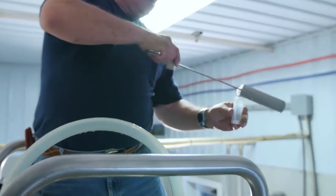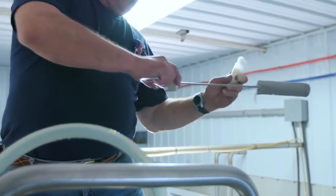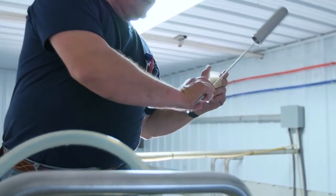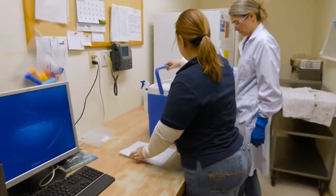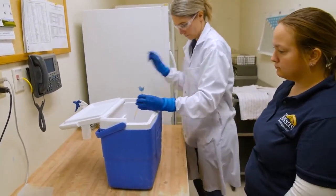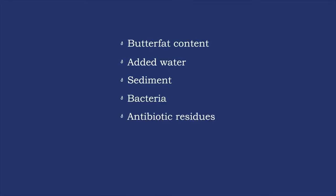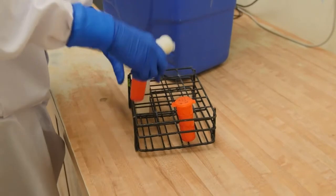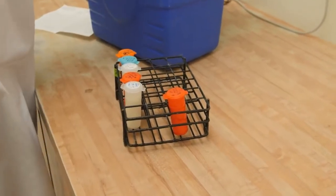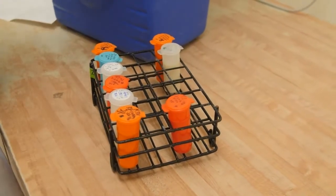Every time you pick up a load of milk, you will get a sample of that milk, which will be used for various purposes. At least once a month, the samples you collect will be taken to a certified industry lab or the Kansas Department of Agriculture State Laboratory for testing. Lab tests include testing for butterfat content, added water, sediment, bacteria, antibiotic residues, somatic cell count, and pesticide residues. This testing must begin within a specific time from when you collected the sample at the farm, and test results determine the price milk producers receive for their product.